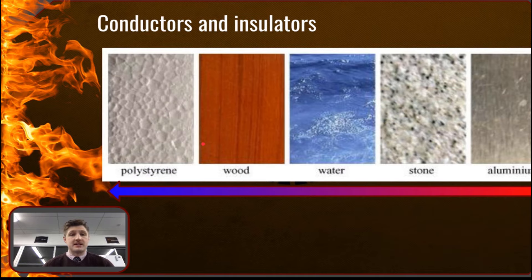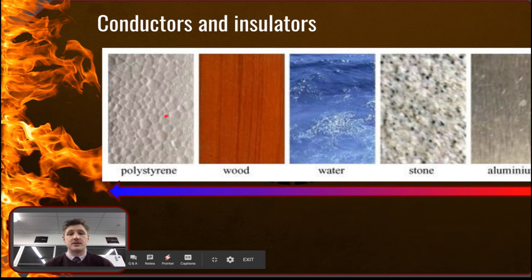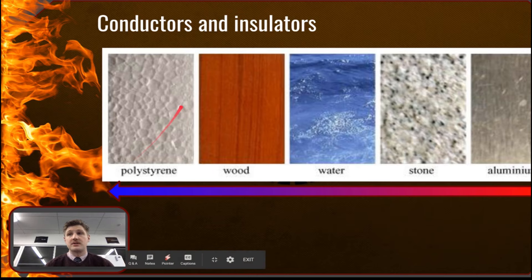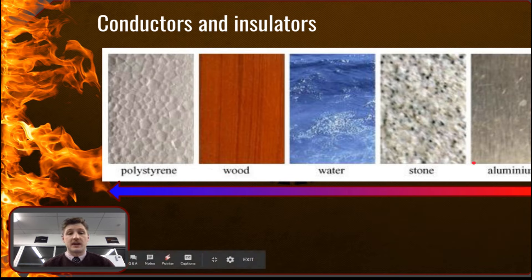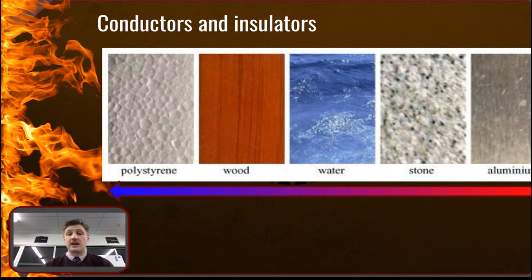Here are some examples of insulators and conductors. Man-made plastics are good insulators of heat because they have no free electrons — no charged particles on the outside to pass on energy. Whereas metals and stones are good conductors of heat because they do have free electrons to pass on that energy.